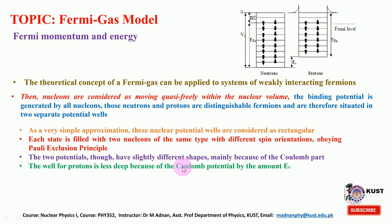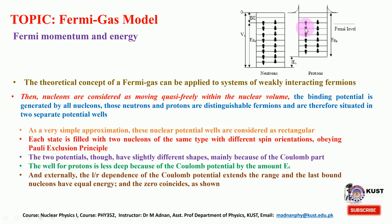The well for the proton is less deep because of the Coulombic potential by an amount EC, the Coulombic energy. This potential V₀ is somewhat lesser for the proton well — the depth is smaller than for the neutron well because of the Coulombic force. The 1/R dependence of the Coulomb potential extends the range, and the last bound nucleons have equal energy, with the zero coinciding as shown.